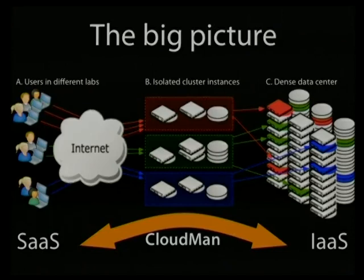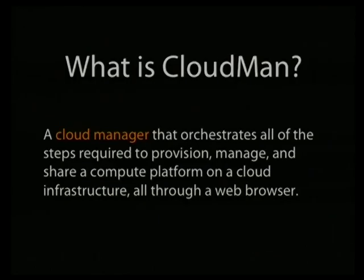The infrastructure component is a bit problematic in that you really don't want researchers to deal with individual machines, hard disks, file systems and so on. Instead, they're more interested in the software layer. That's where the idea of CloudMan emerged — a lightweight platform that bridges the gap between the flexibility of the infrastructure and the functionality of software as a service. CloudMan is basically an orchestrator — it orchestrates all steps required to provision, manage and share compute platforms on a cloud infrastructure, primarily through a web browser.